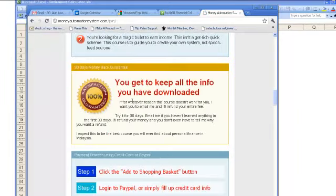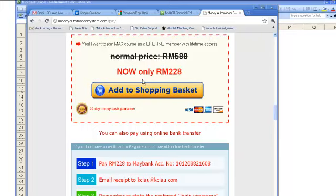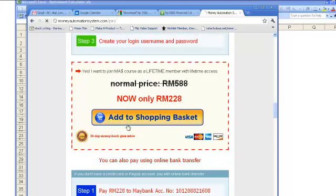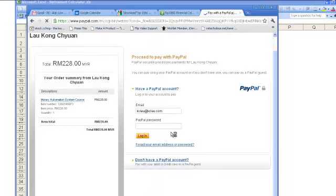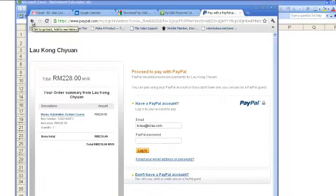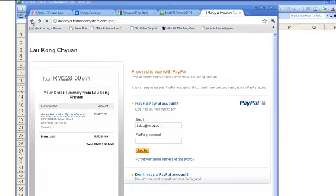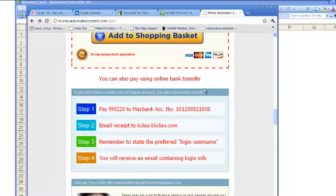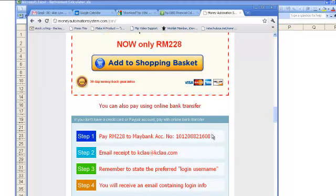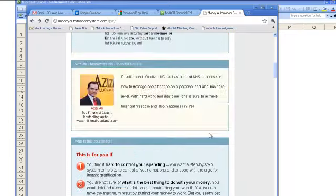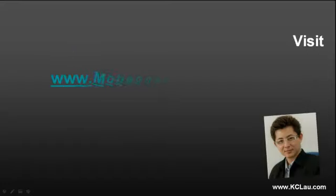Currently, the course is sold at 228 ringgit. Just click add to shopping cart and you'll be able to pay using your credit card through PayPal. It's 228 ringgit one-time payment, or you can use Maybank to transfer money to my Maybank account and I will create the login account. That's all. Please go ahead and visit moneyautomationsystem.com. See you again, bye bye.